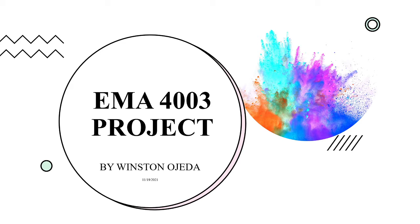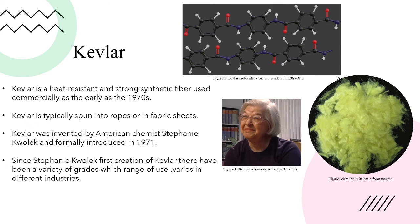EMA 4003 Project by Winston Ojeda. In this project, I will be covering Kevlar. Kevlar is a heat-resistant and strong synthetic fiber material used commercially as early as the 1970s. Kevlar is typically spun into ropes or fabric sheets. Kevlar was first invented by an American chemist named Stephanie Kwolek in the mid-1960s and formally introduced in 1971.